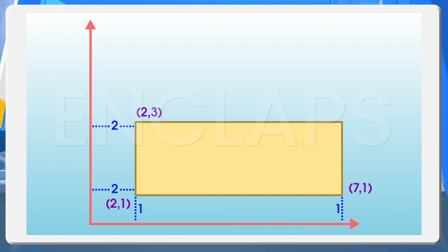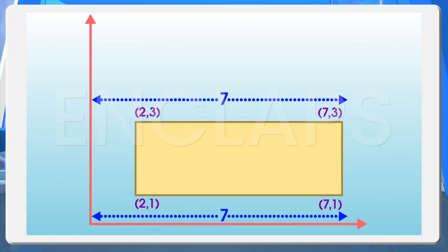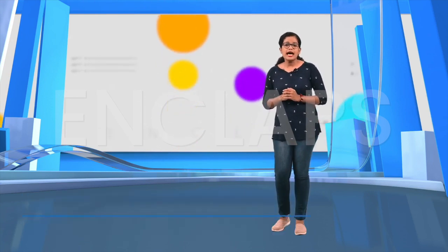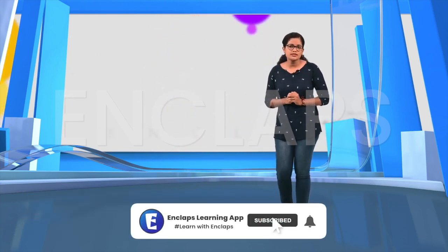Now, find the coordinate of the upper right corner. Since the right side of the rectangle is parallel to the y-axis, the two corners of this side are at the same distance. That is, the x-coordinate of the top right corner is 7. Then, how to find the y-coordinate? Since the height from the x-axis to the top left corner is 3, the distance from the x-axis to the top right corner is also 3. That is, the coordinate of the top right corner is 7, 3. Did you understand how to find the coordinates of the two corners of a rectangle in which sides are parallel to the axis when the coordinates of one of its opposite corners are given?